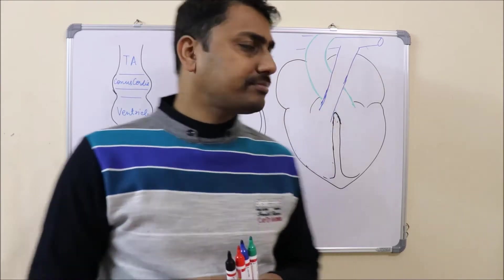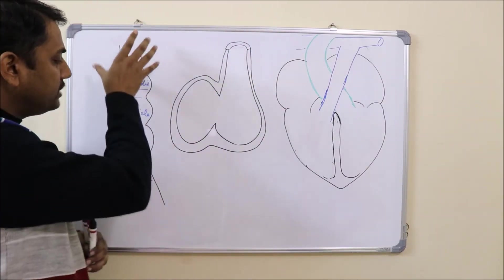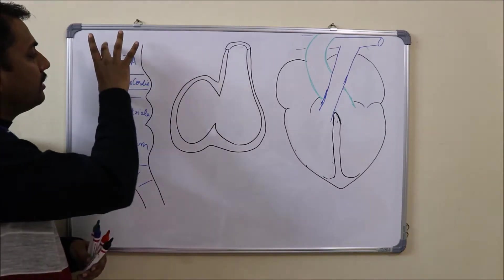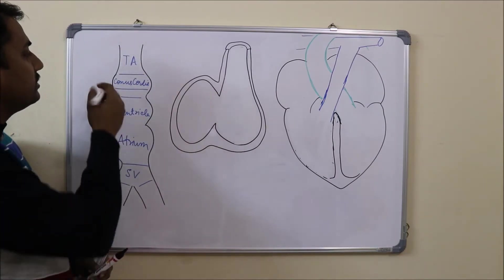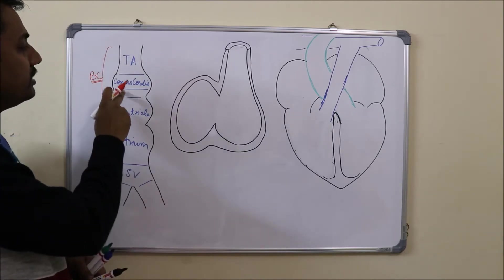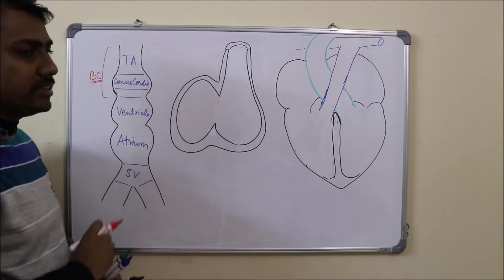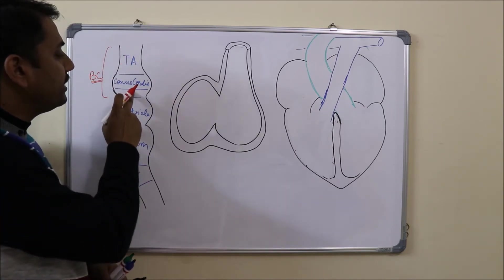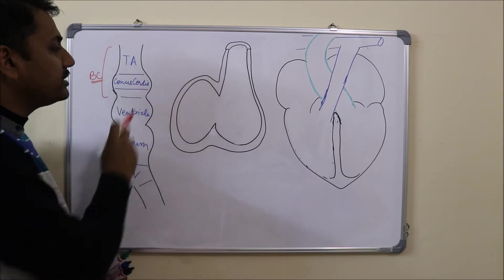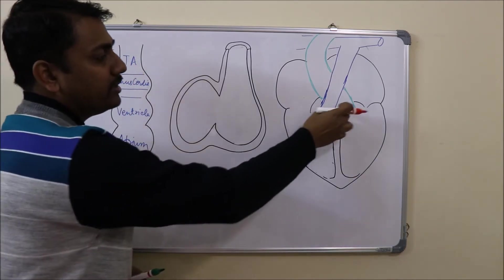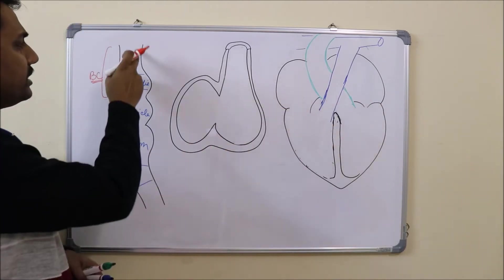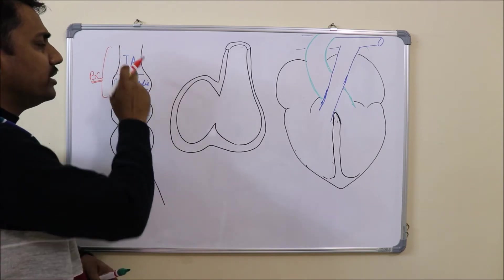Let us look at the normal development of the heart tube. The developing heart tube has been divided into certain parts — it is like a vertical tube channel. In the distal part it is known as the bulbus cordis, which is divided into three parts: a proximal one-third, middle one-third, and distal one-third. The proximal one-third will form the primitive ventricle and trabeculated part of the right ventricle, and the middle one-third is known as the conus cordis and it will form the outflow tract of both the right and left ventricle.